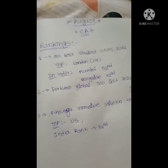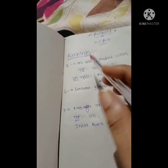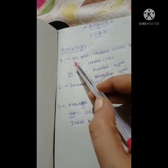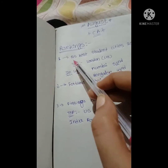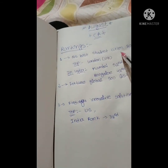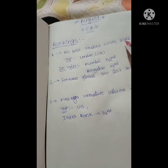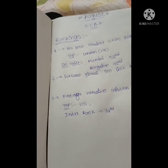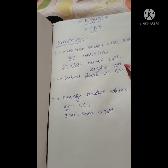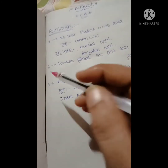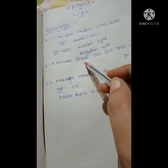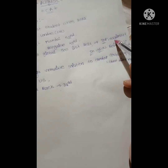First topic is rankings. In August month, on the 1st and 2nd, the QS Best Student Cities 2022 was released. In this ranking, the top country is London. In India, Mumbai is in 52nd position and Bangalore is in 42nd position. Next, on August 3rd to 4th, the Fortune Global 500 List 2021 was released. In this list, the top is Walmart.